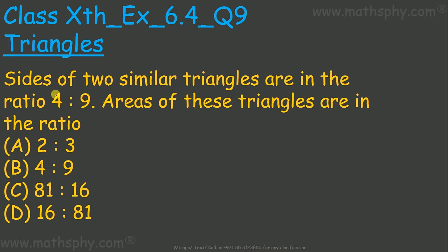This question here: sides of two similar triangles are in the ratio of 4 is to 9. Areas of these triangles are in the ratio of which one?